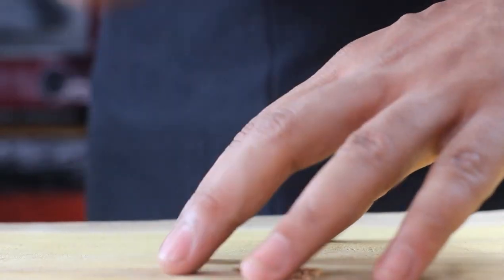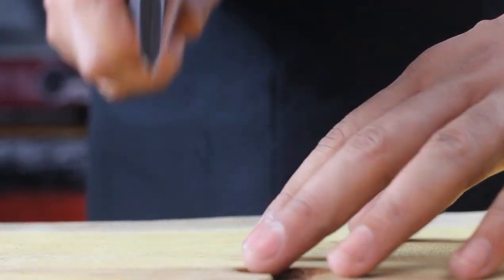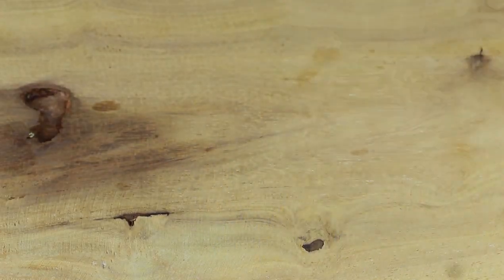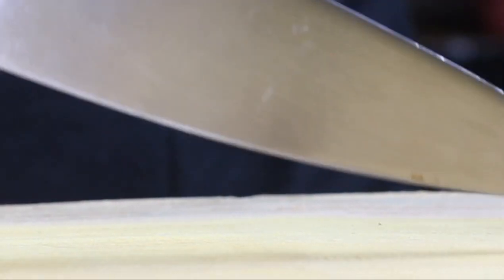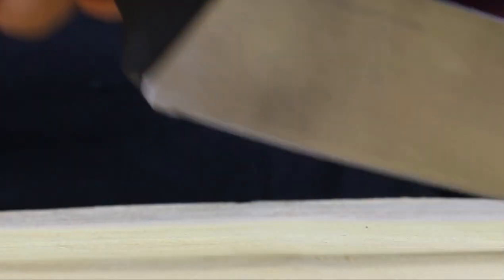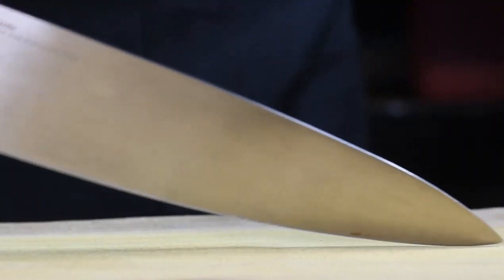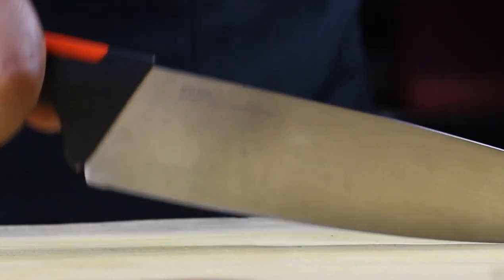Another common mistake is the slicing motion. Some chop aggressively that results in uneven cuts and may even cause accidents. The proper way is to move your knife in a rocking motion, going back and forth with the knife, starting from the tip to the back of the knife like a wave.